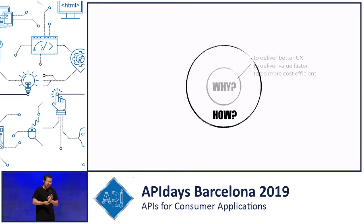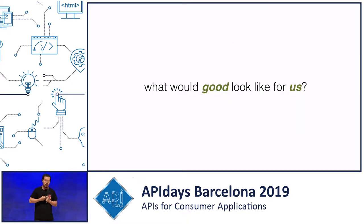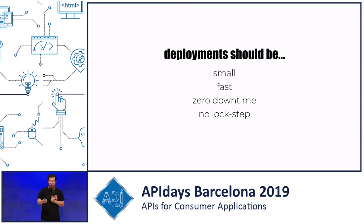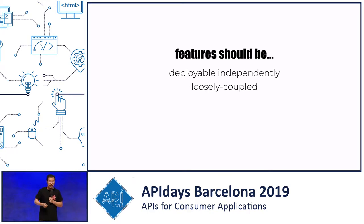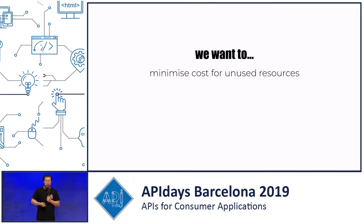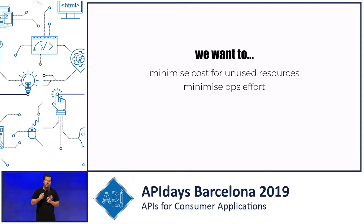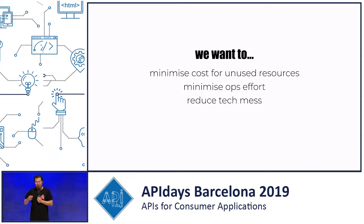In terms of how to do that, we had to first decide what a good architecture would actually look like. We sat down and decided we want an architecture where deployments are fast with no downtime, and no lockstep deployment with the mobile app or web app. We want features to be loosely coupled and independently deployable. Overall, we want to spend less money on resources we don't use — spending smarter, more efficiently — and minimize the amount of operational overhead we carry as a team.